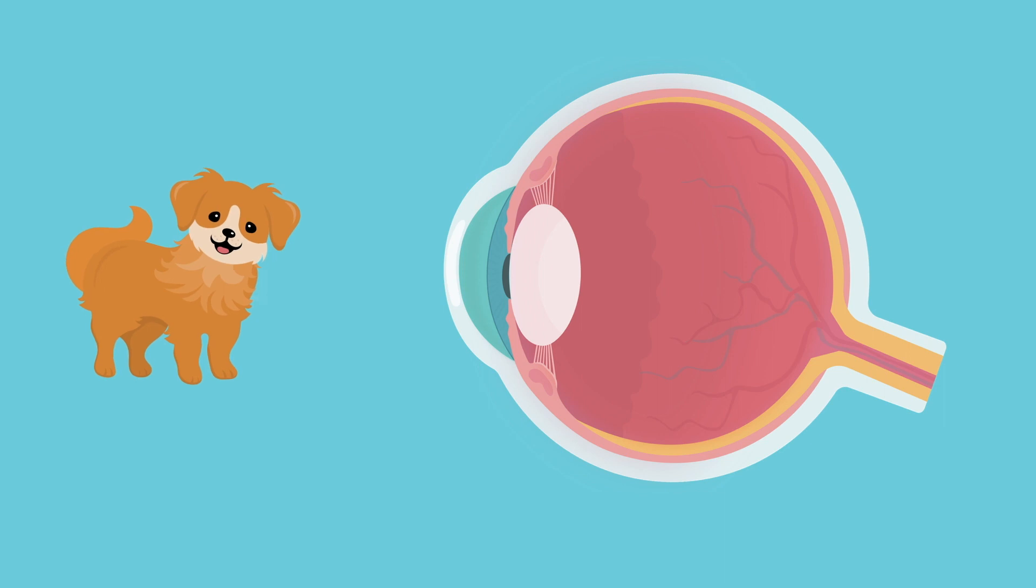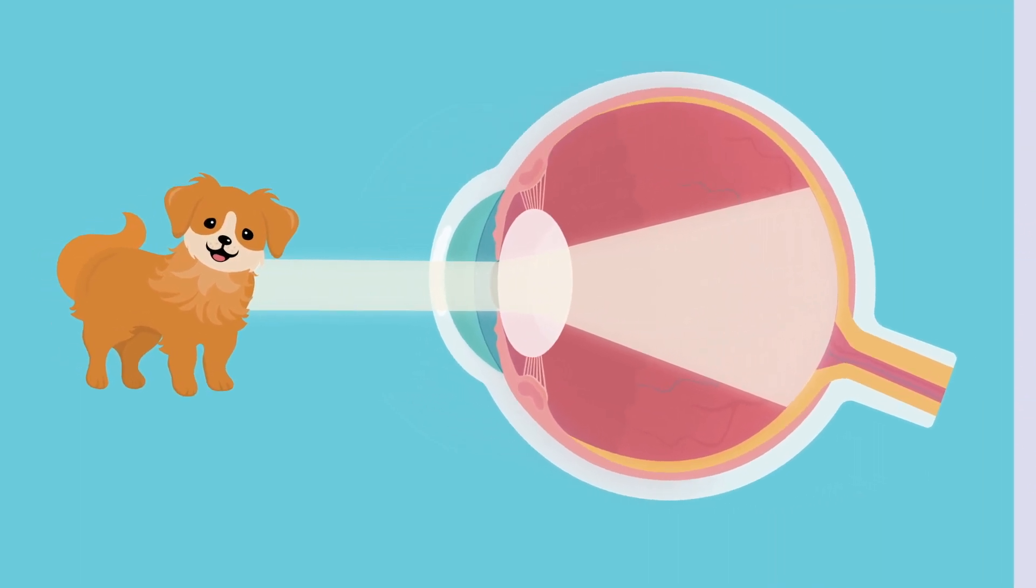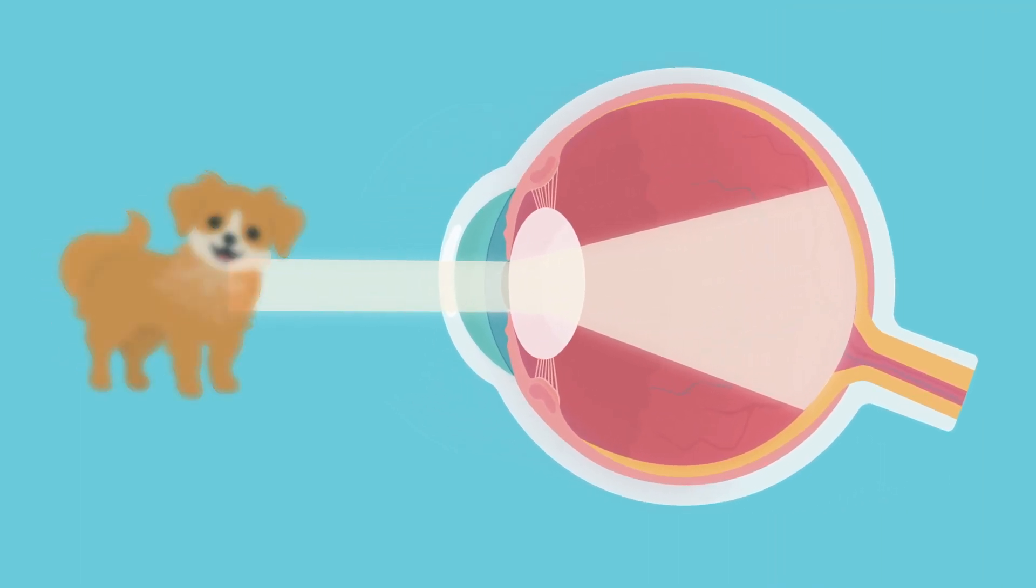However, if light from one single point hits the retina in multiple different positions, our brain interprets that the point is also located in multiple different positions in space. The result of this is that this object is perceived as blurred.